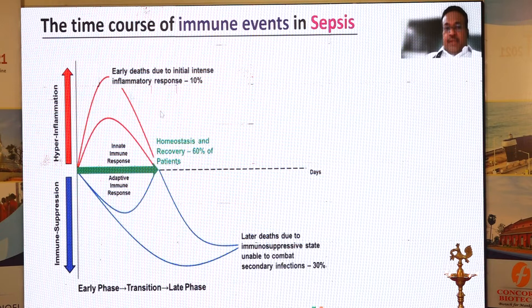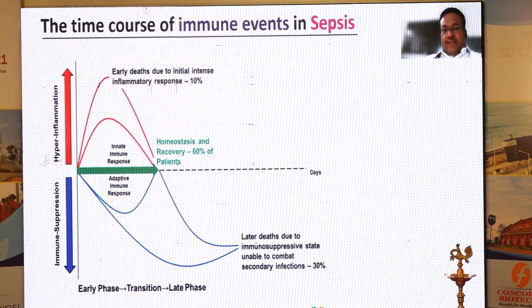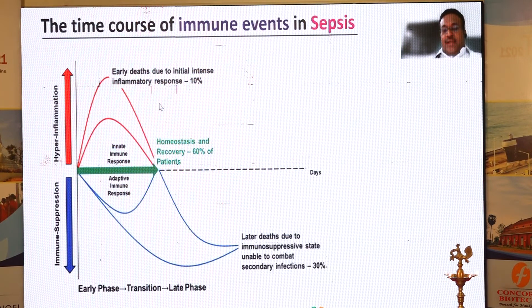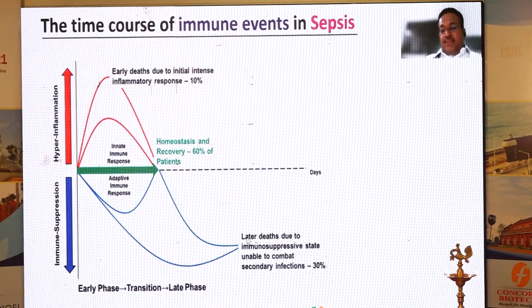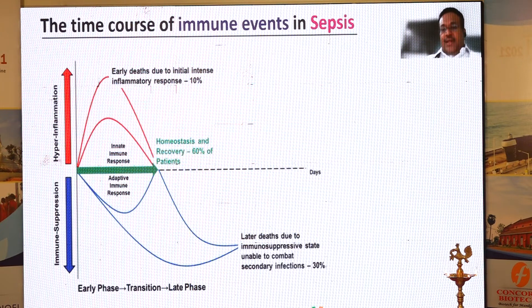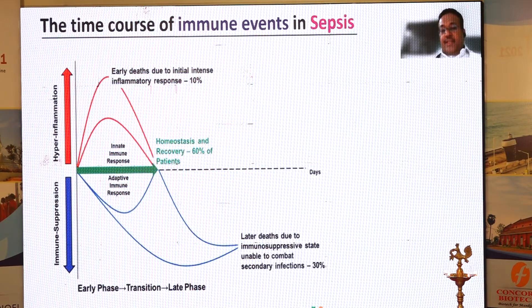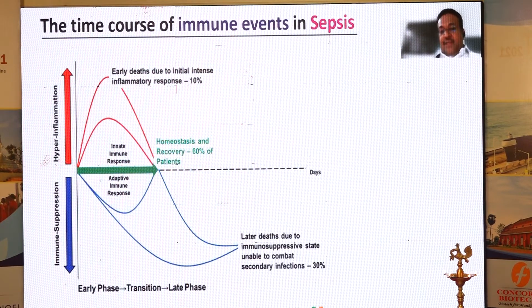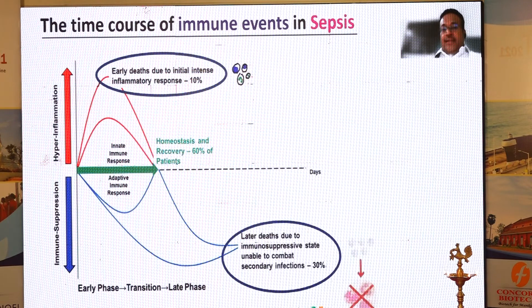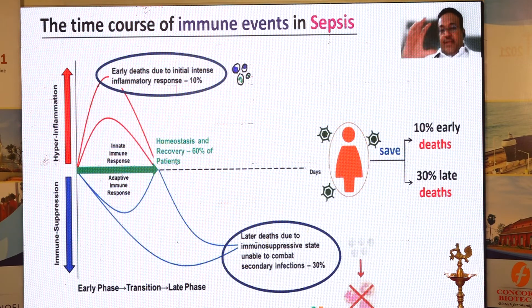When you look at the immune events in sepsis, the initial part always has a hyper-inflammatory phase. It is shown that only 10% of deaths happen in this inflammatory phase. Following the cytokine phase, there is an immunosuppressive phase where more deaths — around 30% — occur. If you look at sepsis mortality, it is around 40%. So 10% of deaths happen in the acute phase and 30% happen in the post-sepsis immunosuppressive phase. Our whole effort is to maintain immune homeostasis and by doing so, possibly save that 30%.